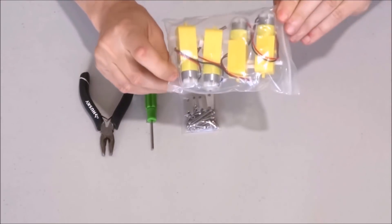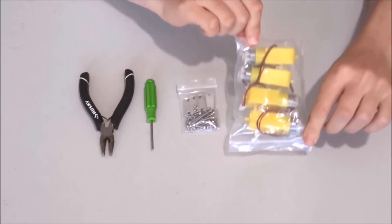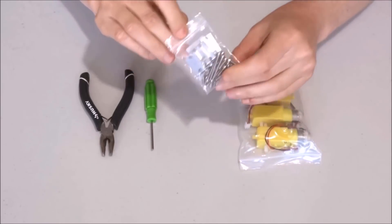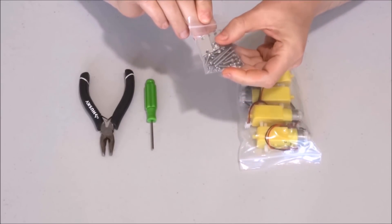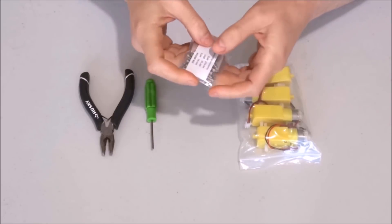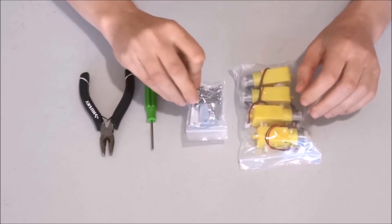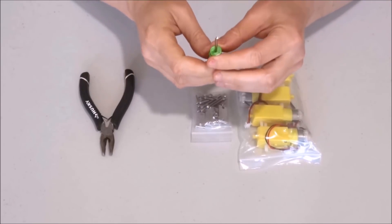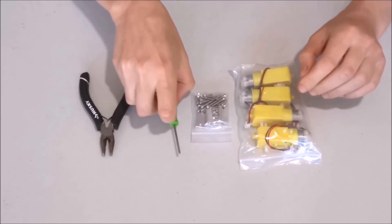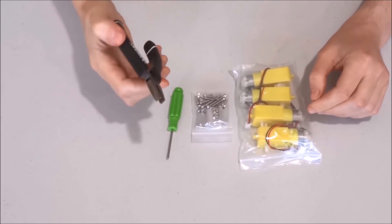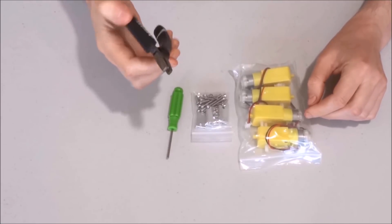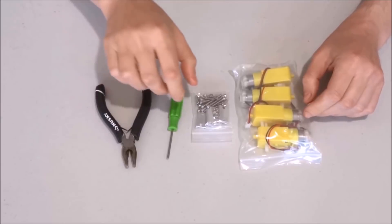For this we will need the bag of motors and the bag with mounts, bolts and nuts for them. The bag is clearly marked for motor. We will use the hexagonal tool from the set and to be able to tighten well the nuts I will just use some pliers.